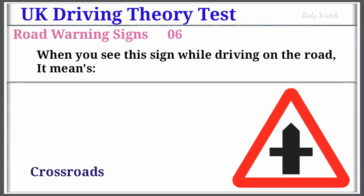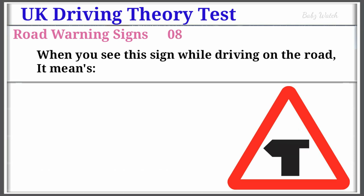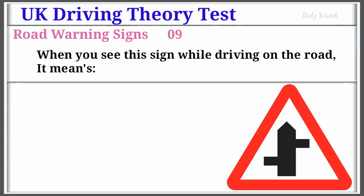UK Driving Theory Test Road Warning Sign Number 7: When you see this sign while driving on the road, it means Junction on Bend Ahead. Warning Sign Number 8: When you see this sign while driving on the road, it means T-Junction with priority over vehicles from the right. Warning Sign Number 9: When you see this sign while driving on the road, it means Staggered Junction.